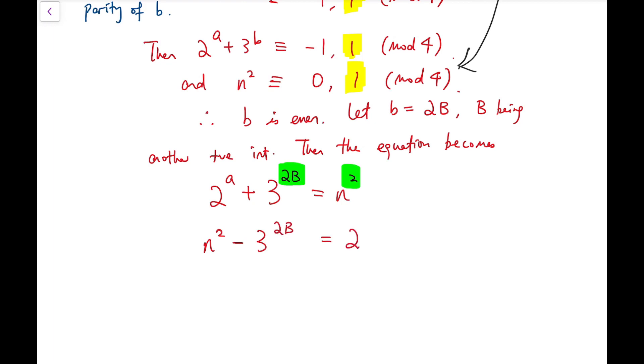So n squared minus 3 to the power of 2B equals 2 to the power of a. And so we can factorize like this.